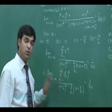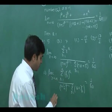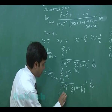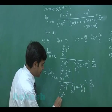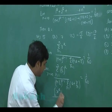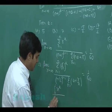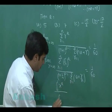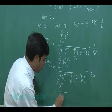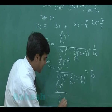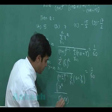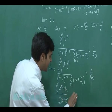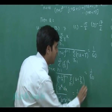This can be converted to an integral. The numerator becomes the integral from 0 to 1 of x to the power a dx, and the denominator becomes 1 times the integral from 0 to 1 of (a plus x) dx, and this equals 1 by 60.